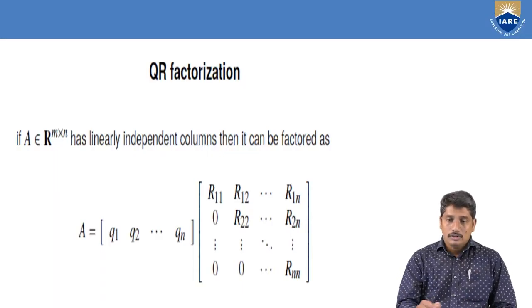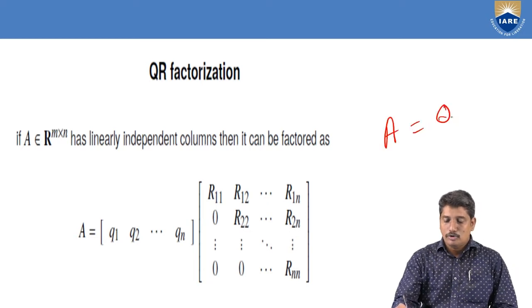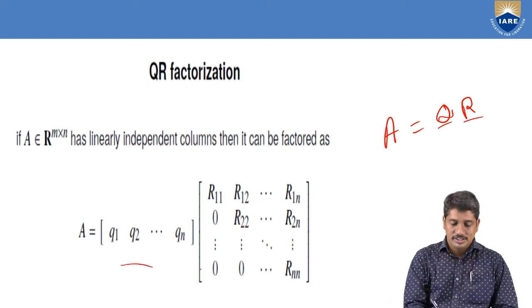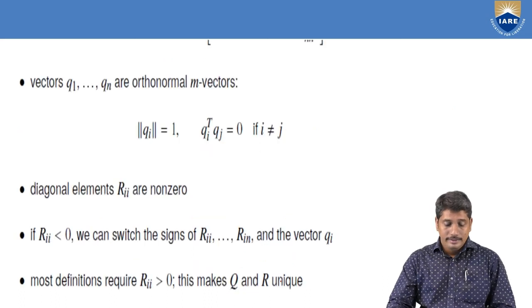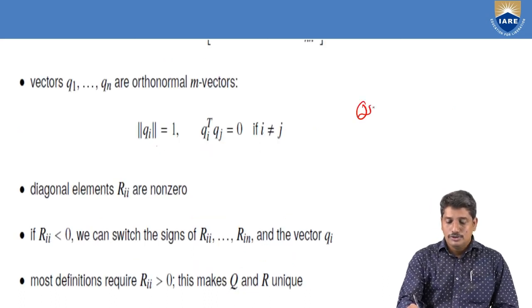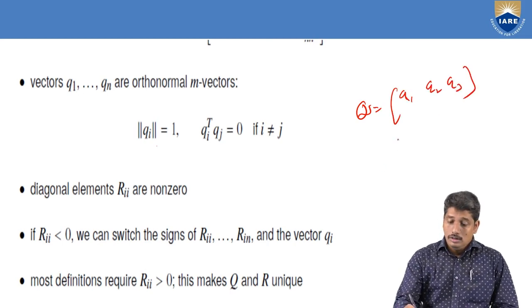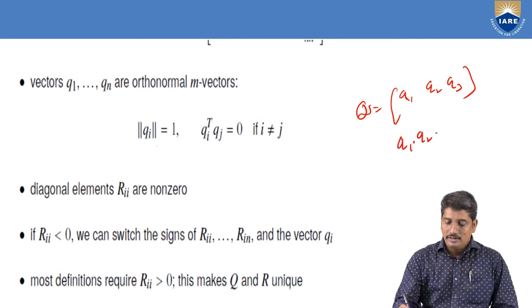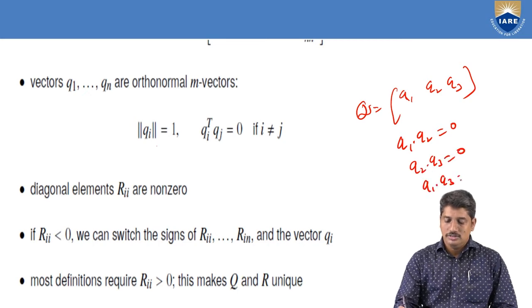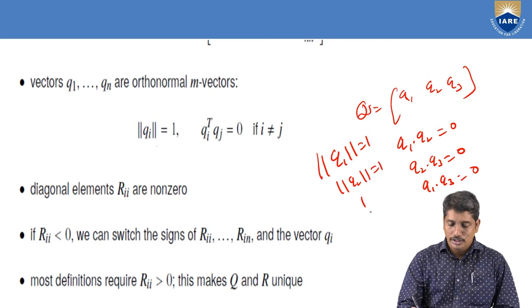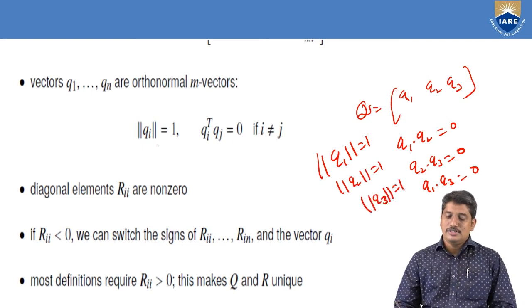As a small recap, any matrix A can be written as the product of two matrices Q and R, where Q is orthonormal and R is upper triangular. Orthonormality means that if Q has columns Q1, Q2, Q3, then the dot product of every pair is zero: Q1·Q2 = 0, Q2·Q3 = 0, Q1·Q3 = 0. Normality means the norm of Q1, Q2, and Q3 are each equal to 1.